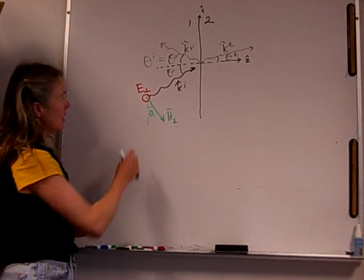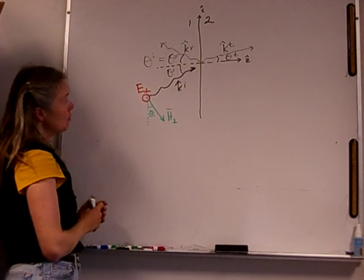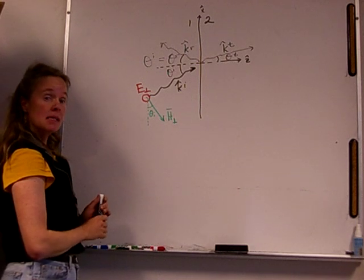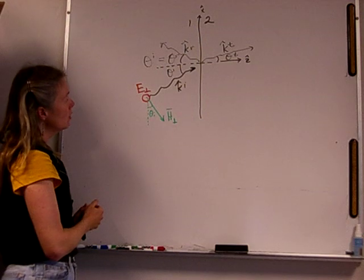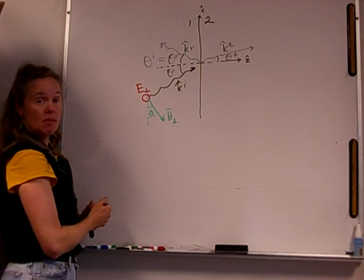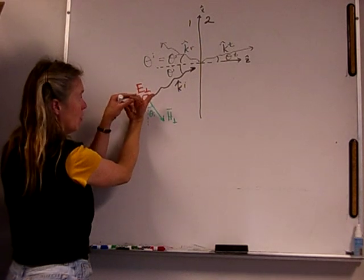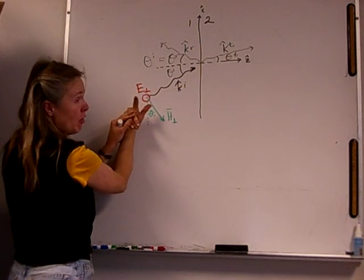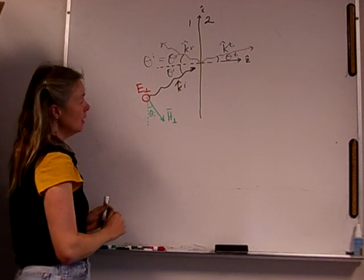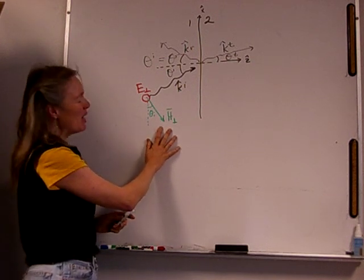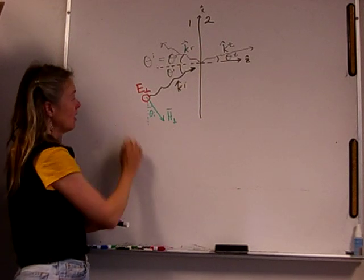The first case I want to look at today is the perpendicular polarized case. For the perpendicular polarized case, that means the electric field is perpendicular to the plane of incidence, or perpendicular to the blackboard. Last time we decided that if we put our thumb in the direction of K and our finger in the direction of E, our third finger would show us the direction of H. That's considered H perpendicular, even though H is parallel to the board — it's still the perpendicularly polarized electric field case.